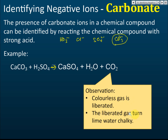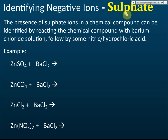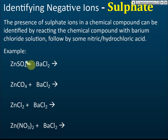How to identify sulfate: the presence of sulfate ions in a chemical compound can be identified by reacting the compound with barium chloride solution. After adding barium chloride solution, we then add some nitric or hydrochloric acid. For example, consider zinc sulfate, zinc carbonate, zinc chloride, and zinc nitrate — when they react with barium chloride, what do you get?